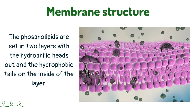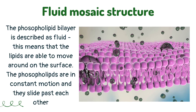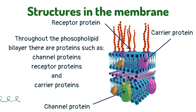The phospholipids are set in two layers with the hydrophilic heads out and the hydrophobic tails on the inside of the layer. The phospholipid bilayer is described as fluid, meaning that the lipids are able to move around on the surface. The phospholipids are in constant motion and slide past each other. This fluid nature gives the cell flexibility and allows cells such as red blood cells to squeeze through smaller gaps without rupturing.